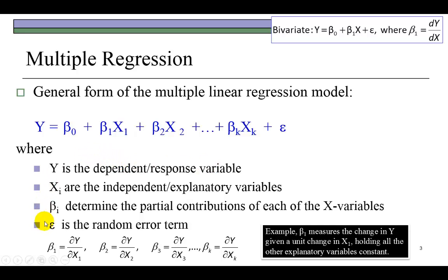In calculus, as I show here, these coefficients are called partial derivatives because they measure the change in Y per unit change in the underlying explanatory variable holding the remaining explanatory variables constant. For example, β₁ calculates the change in Y per unit change in X₁ holding the rest of the explanatory variables constant.